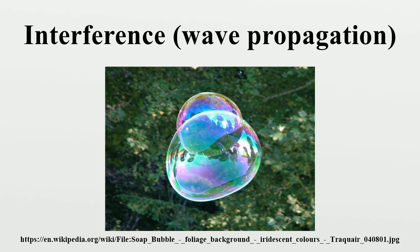Between two plane waves, a simple form of interference pattern is obtained if two plane waves of the same frequency intersect at an angle. Interference is essentially an energy redistribution process. The energy which is lost at the destructive interference is regained at the constructive interference. One wave is traveling horizontally, and the other is traveling downwards at an angle theta to the first wave. Assuming that the two waves are in phase at the point B, then the relative phase changes along the x-axis.